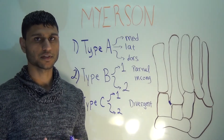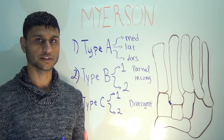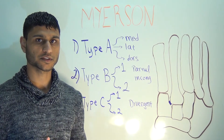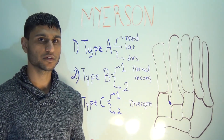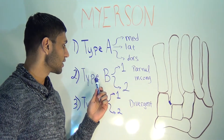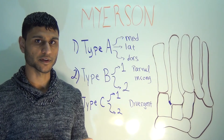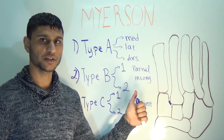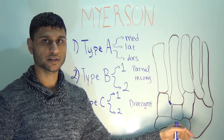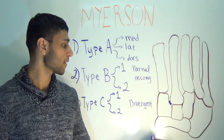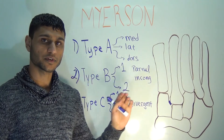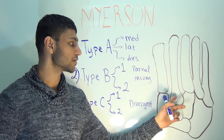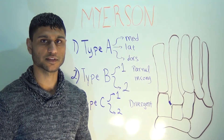The Myerson classification is divided into types A, B, and C. A type A injury is when all the metatarsals as a unit dislocate in one direction — most often medial, lateral, or dorsal. Type B injuries are known as partial incongruity. Type B1 is when the first metatarsal dislocates medial or dorsal while the lesser metatarsals are unaffected and remain in anatomical position. Type B2 is when the first metatarsal remains in its anatomical position and one or more of the lesser metatarsals dislocates lateral or dorsal.